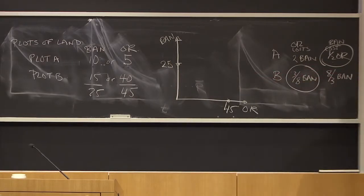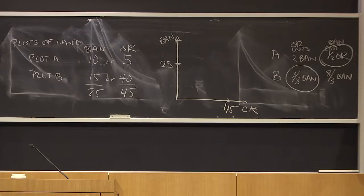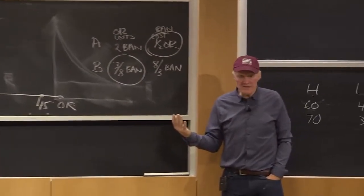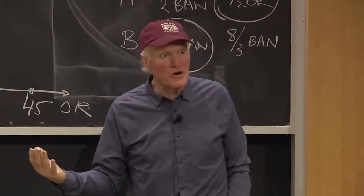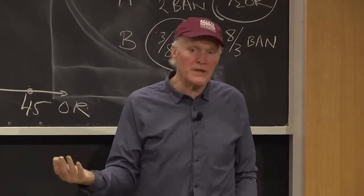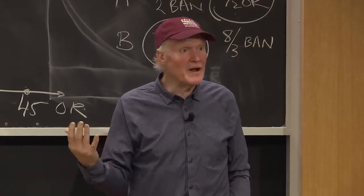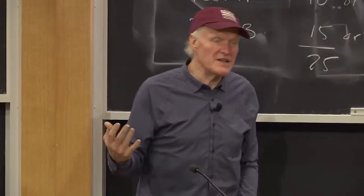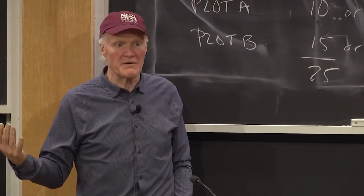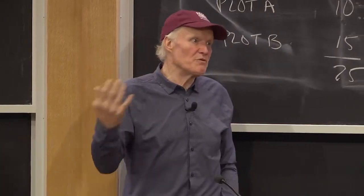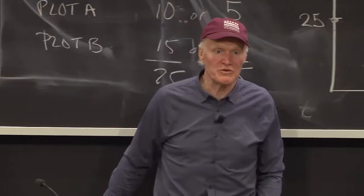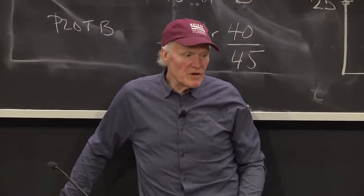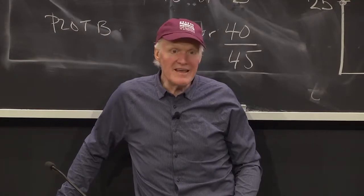There are two ways to be a low-cost producer of widgets. One is to be really good at widgets. The other is to be really bad at everything else — either one will work. The low-cost producer of sheep is not the land that can produce the most sheep per acre; it's the land that can't be used for much of anything else. Comparative advantage is a key concept.